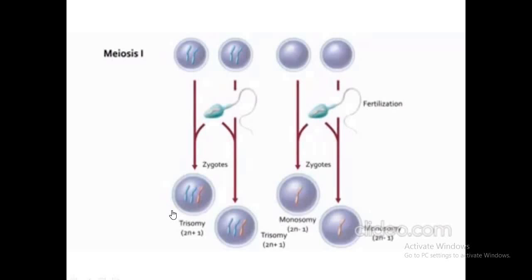So during Meiosis I, if the chromosomes are not separated properly, we get two cells with trisomy condition (2n+1) and two cells with monosomy condition (2n-1). Meiosis consists of two different phases, which have been discussed in other videos on the channel.